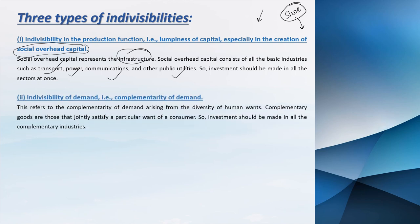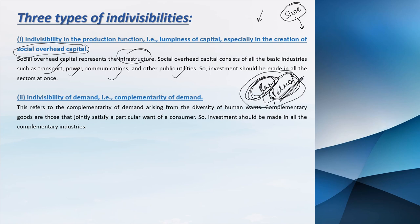The second one is indivisibility of demand — complementarity. Complementary goods are those like car and petrol, which is the basic example. These are complementary goods — when the price of one changes, the demand for the other also changes. If we are investing in the car industry, we should also invest an amount in the petrol industry, because the demand of these two goods is complementary. We should not invest in one sector and leave the other — we need to cover sectors whose demand is complementary, so that investing in one also impacts the other.